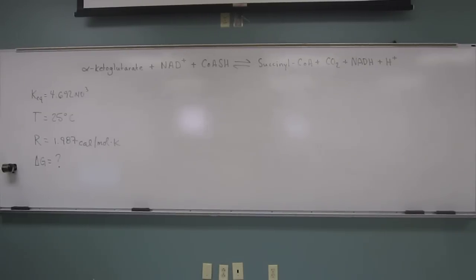So this one says for the following reaction: alpha-ketoglutarate plus NAD+ plus CoASH goes to succinyl-CoA plus carbon dioxide plus NADH plus a proton.